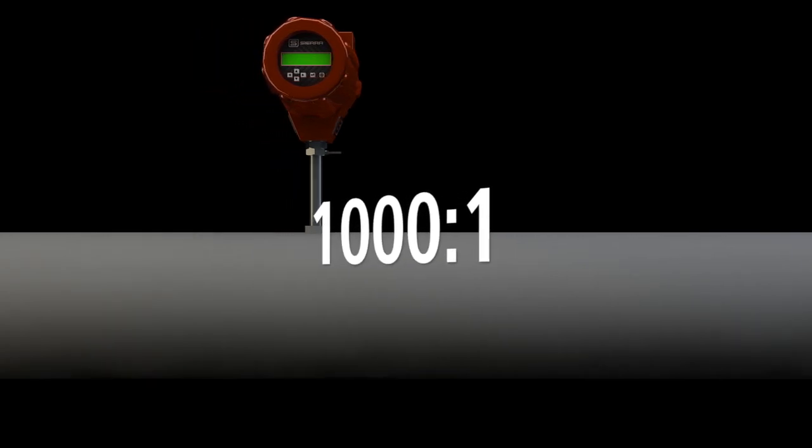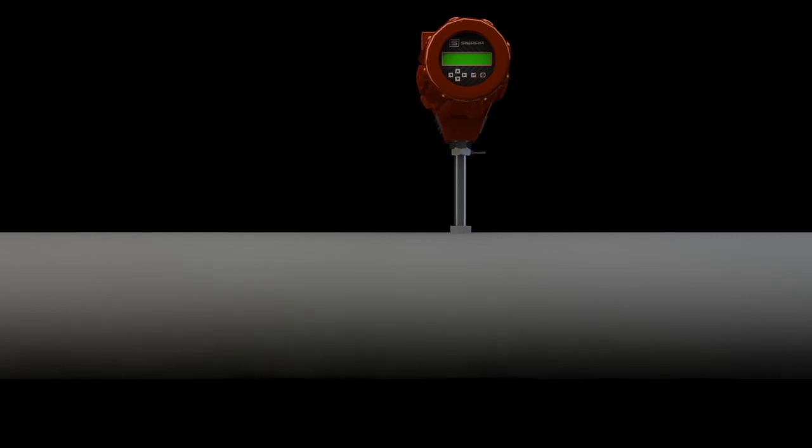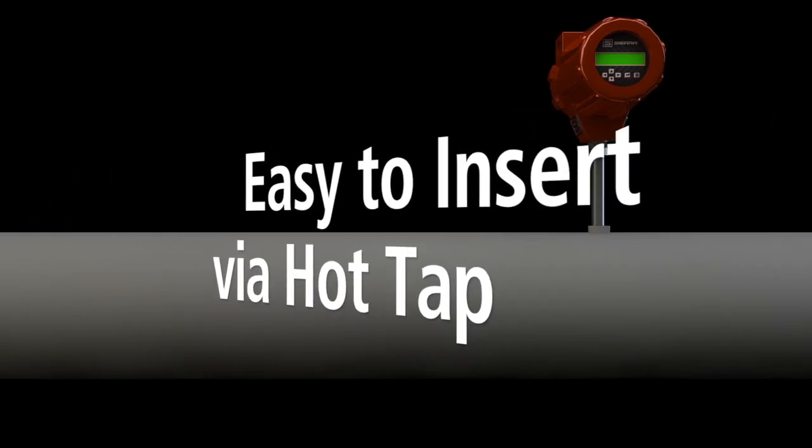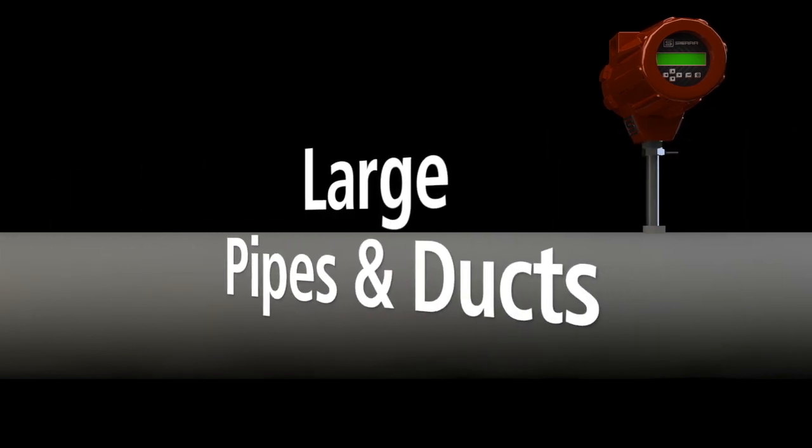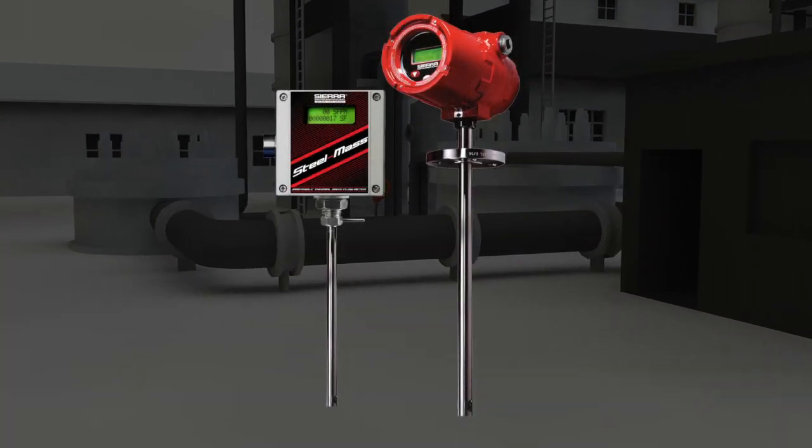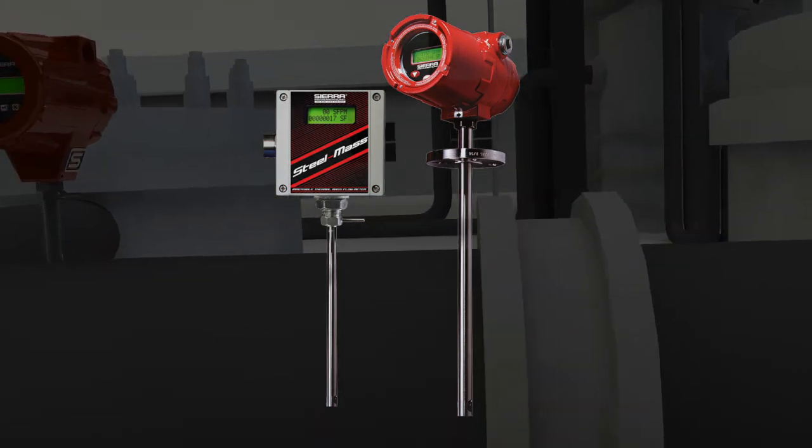In addition to accuracy, thermal flow meters have become extremely popular due to high turndown, up to 1,000 to 1, giving the ability to measure very low flows up to very high flows with the same instrument. Since they are rugged and reliable, have no moving parts, are easy to insert via hot tap, have negligible pressure drop, and offer an economical solution to large diameter pipes and ducts, thermal technology has been rapidly adopted over the last decade.